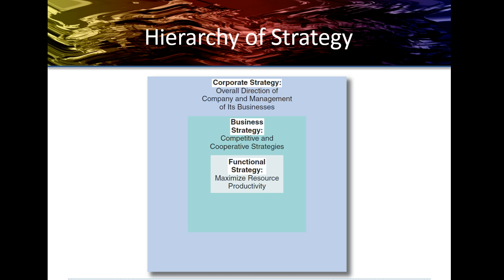Business strategy may fit within two overall categories: competitive and cooperative strategies. Functional strategy is the approach taken by a functional area to achieve corporate and business unit objectives. We break the business unit down into functional areas to achieve corporate and business goals. Strategies are developed to maximize resources down to these functional units, creating a hierarchy — overall corporate strategy, then business unit strategy, then strategy down to the functional area.